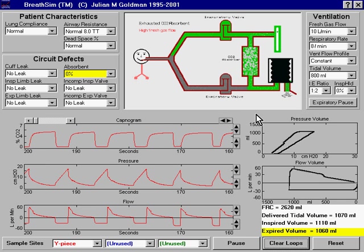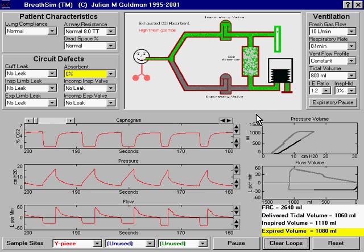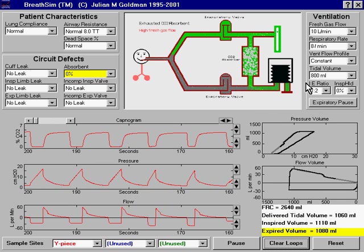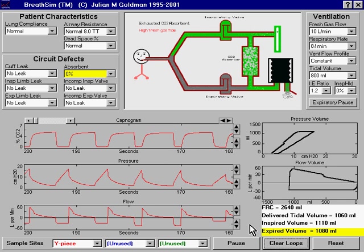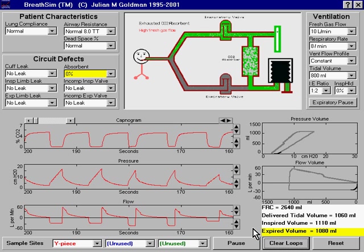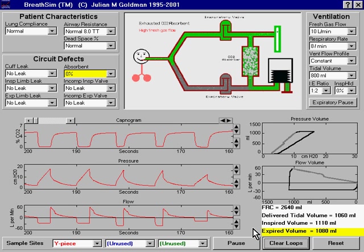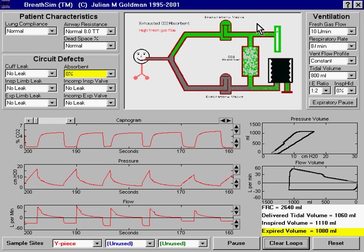The high fresh gas flow that we used to wash CO2 out of the breathing system has created another problem. And that problem is hyperventilation. Look, the set tidal volume is still 800 milliliters. However, the expired volume is now 1080 milliliters. That increase in expired volume is due to the contribution of fresh gas flow to the delivered tidal volume.